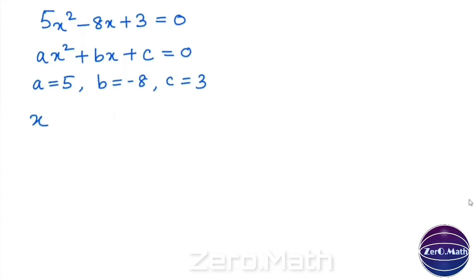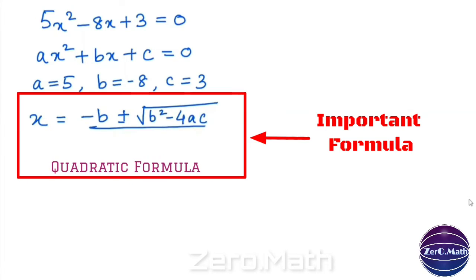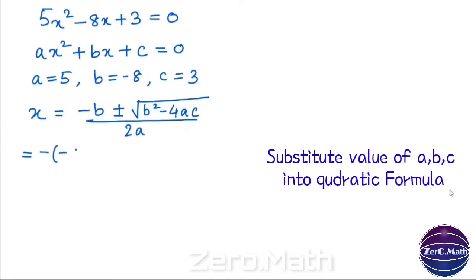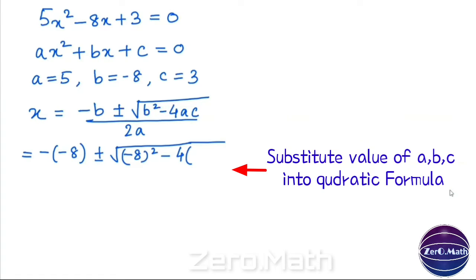Now, the quadratic formula says that x equals negative b plus or minus root over b squared minus 4ac, divided by 2a. Putting all the values: the value of b is negative 8, so minus of negative 8, plus or minus root over negative 8 whole squared minus 4ac. The value of a is 5 and the value of c is 3, divided by 2 times 5.